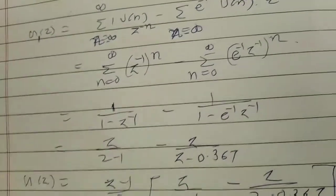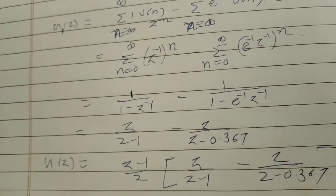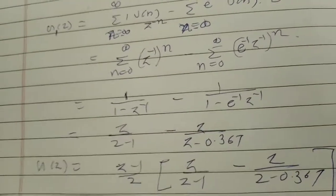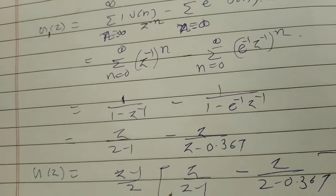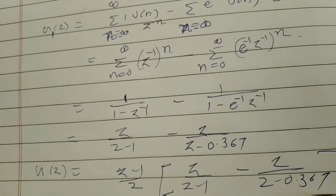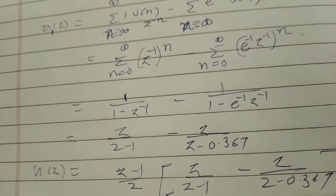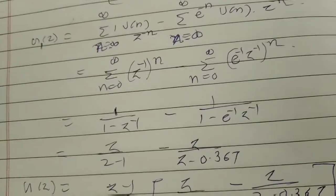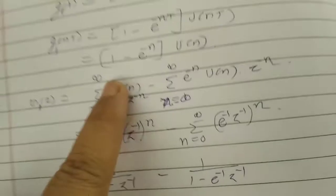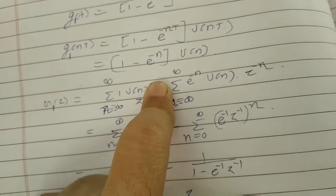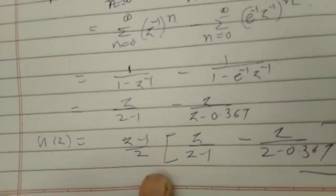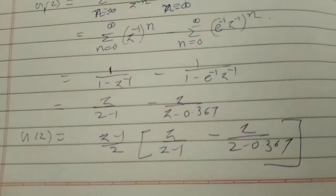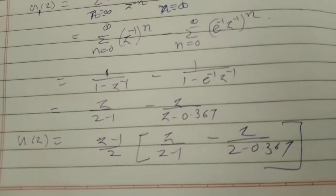In such problems, you have to convert the analog signal into a discrete signal, then take the Z-transform. They will give you the function in the Laplace domain — convert it, take the inverse Laplace transform to get the analog signal, then convert it to discrete by substituting t equal to nT, and after that take the Z-transform. That's it for this video, thank you.